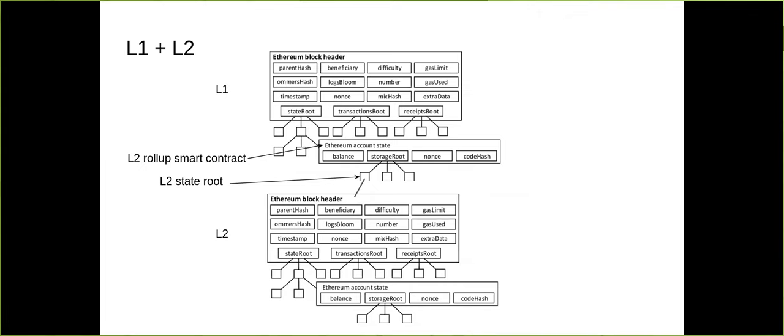If you want to do L1 plus L2, the tree just gets higher and higher the more layers you use. In the Ethereum account state, the L2 rollup smart contract on Ethereum stores the L2 state root in its storage root at some point. Since Taiko is fully equivalent, it's basically a copy-paste of whatever is on top, giving you the same mechanism.